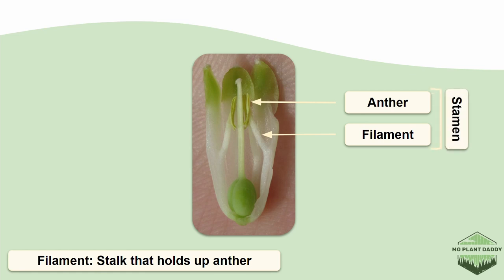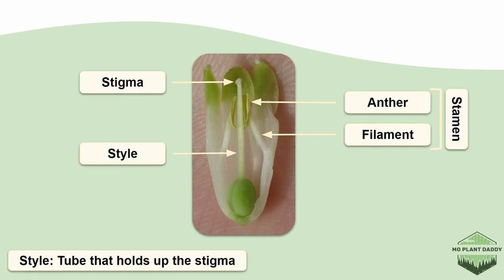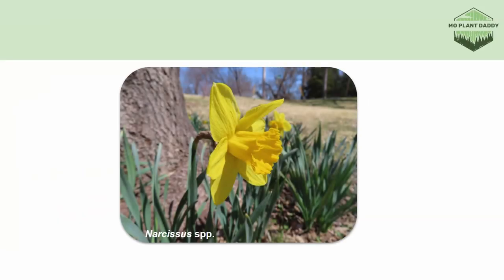Together the anther and the filament make the stamen, the male reproductive organ. Next we have a stigma, which is a sticky bulb where pollen will land to fertilize a flower. The stigma sits on top of the style, which is a tube that holds up the stigma and rests on top of the ovary, which contains the egg cells of the flower known as ovules. Altogether the stigma, style, and ovary make up a pistil or carpel, which is the female reproductive organ.